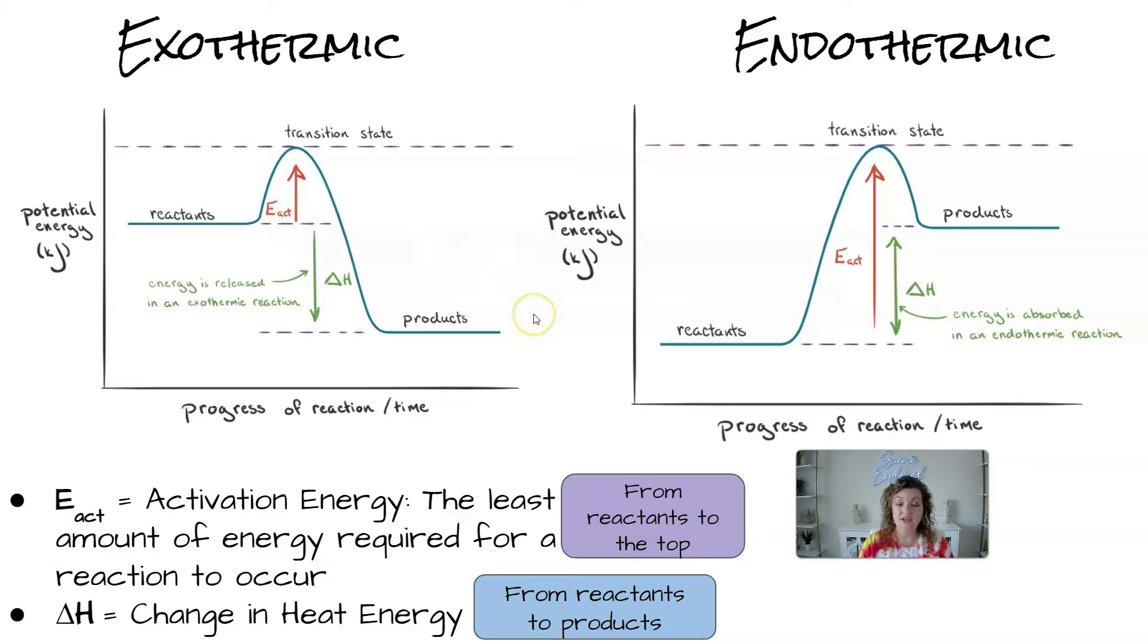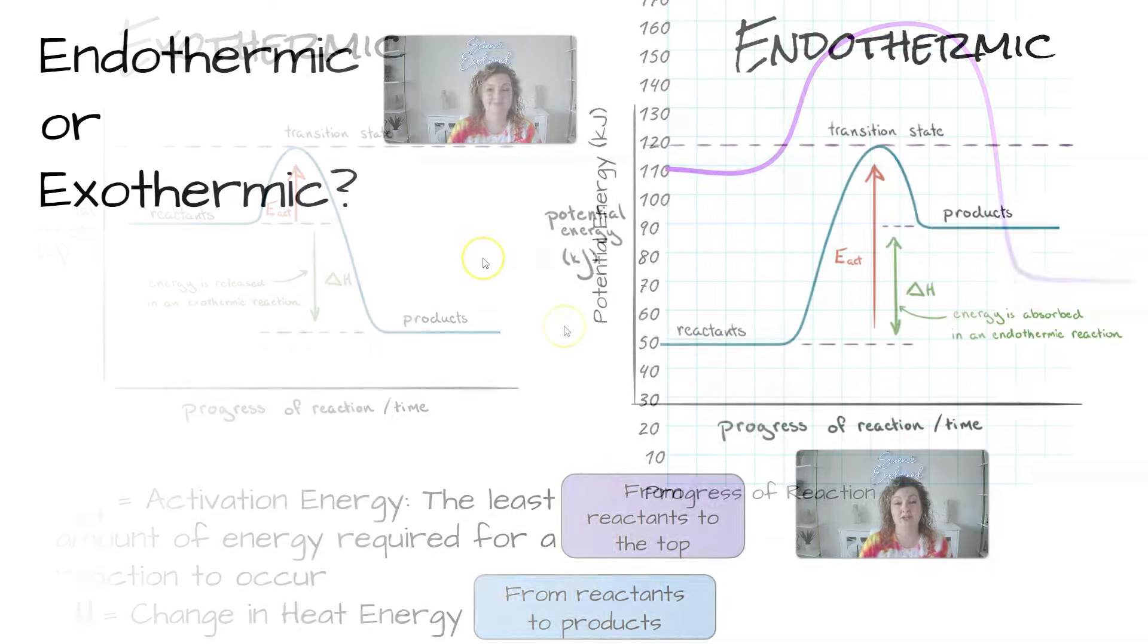And the other one that you're going to need to find is your delta H, which just is the change in heat energy. And you're going to go from your reactants all the way down to your products. Again, subtract these, and then you will have your delta H number.